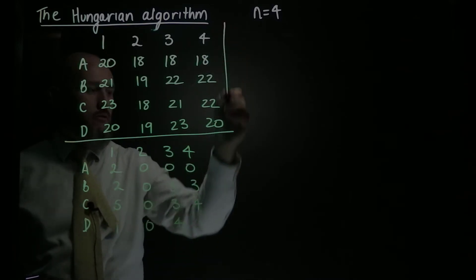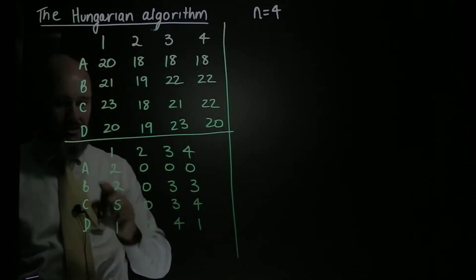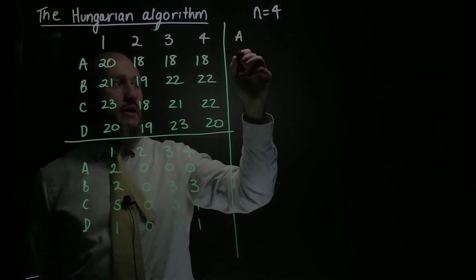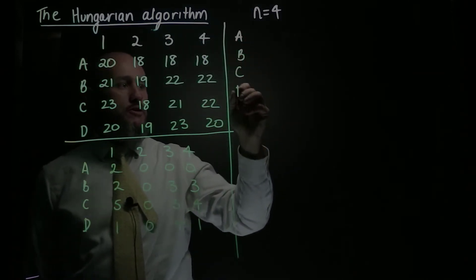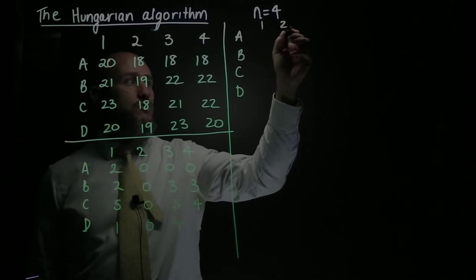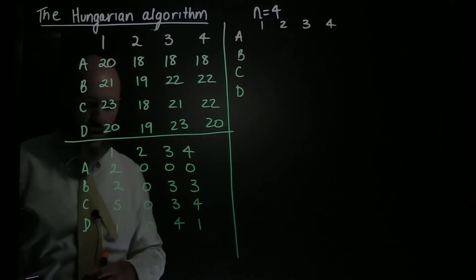Now over here, and again I'm going to sort of set up some columns, I'm going to do my next level, which will be A, B, C, D, and 1, 2, 3, 4, and I'm going to do a column reduction.